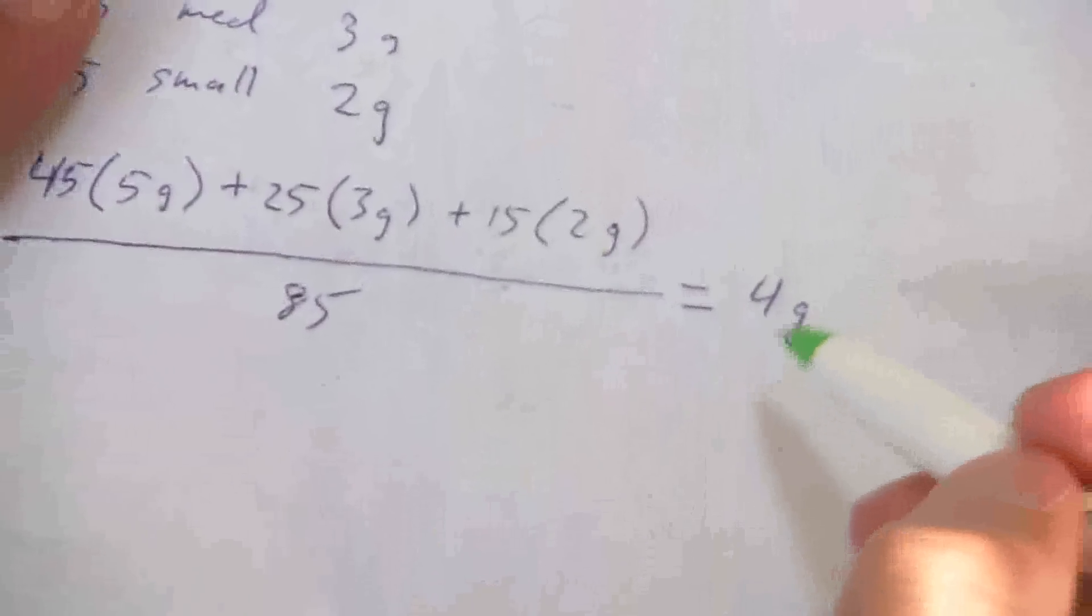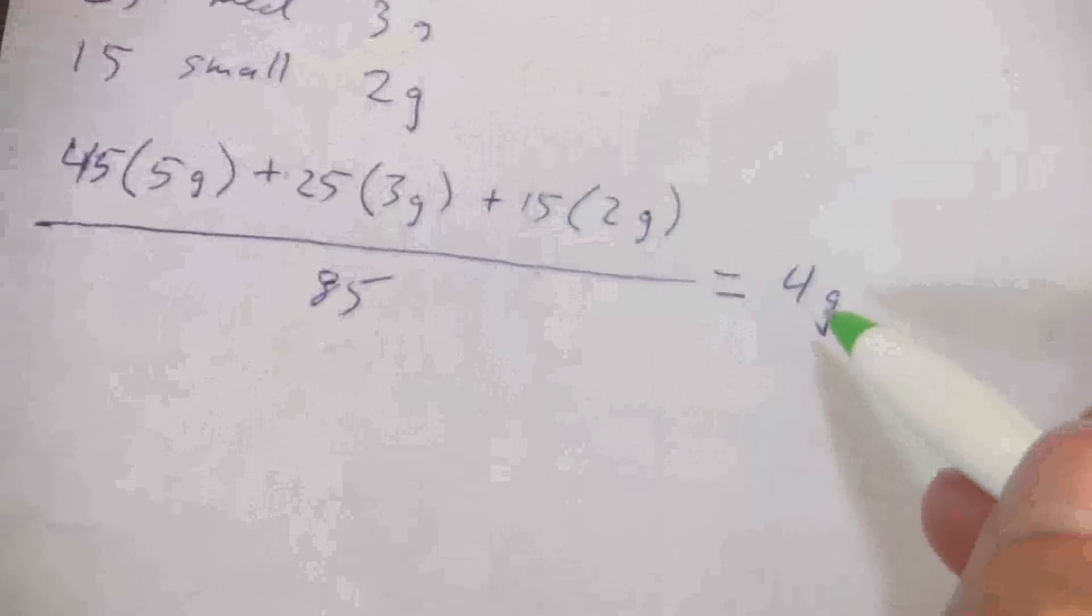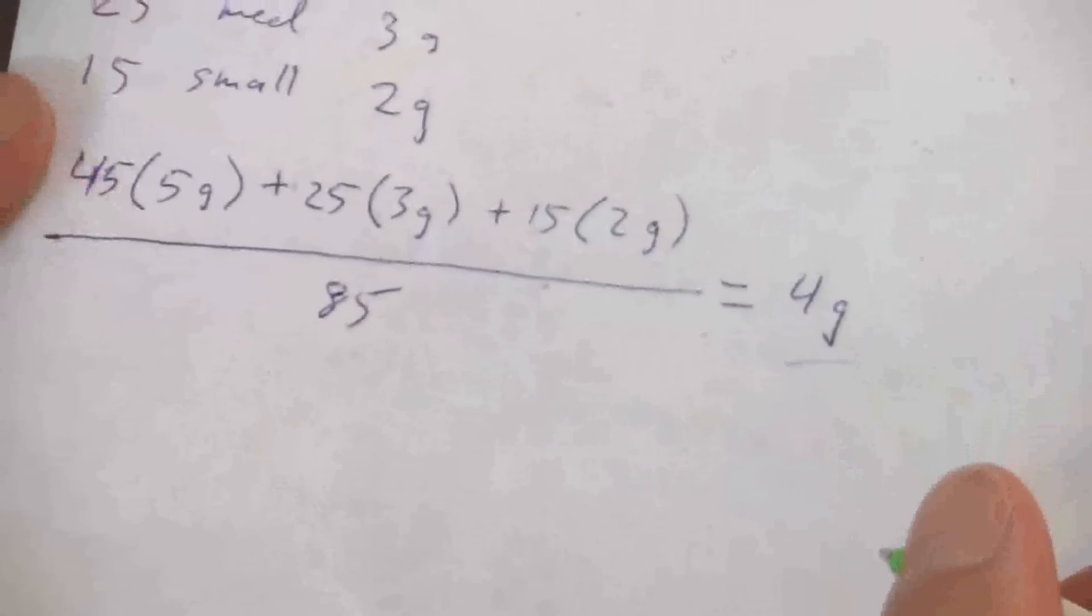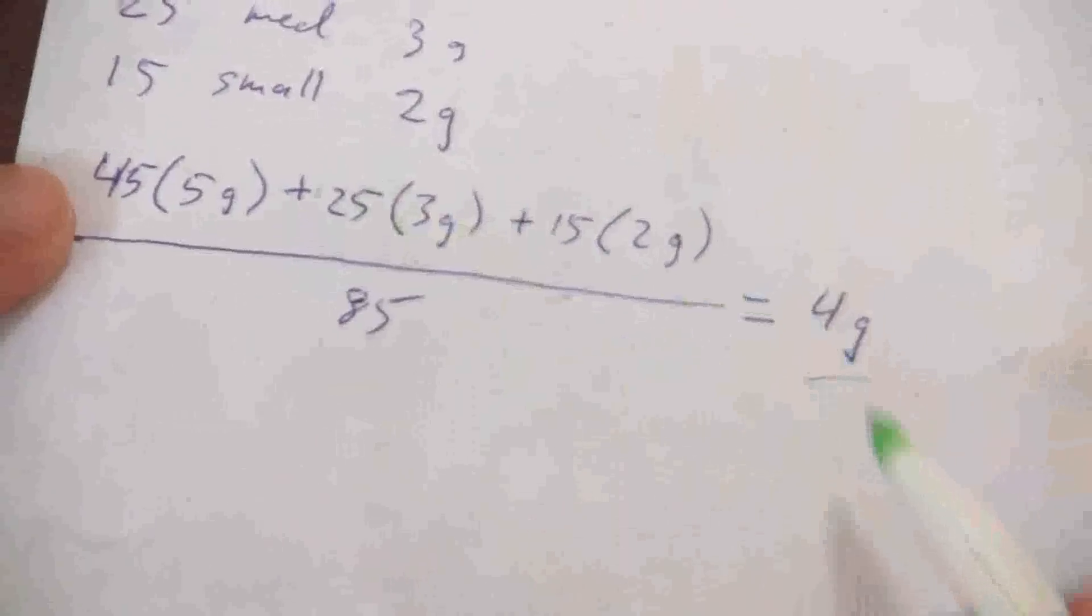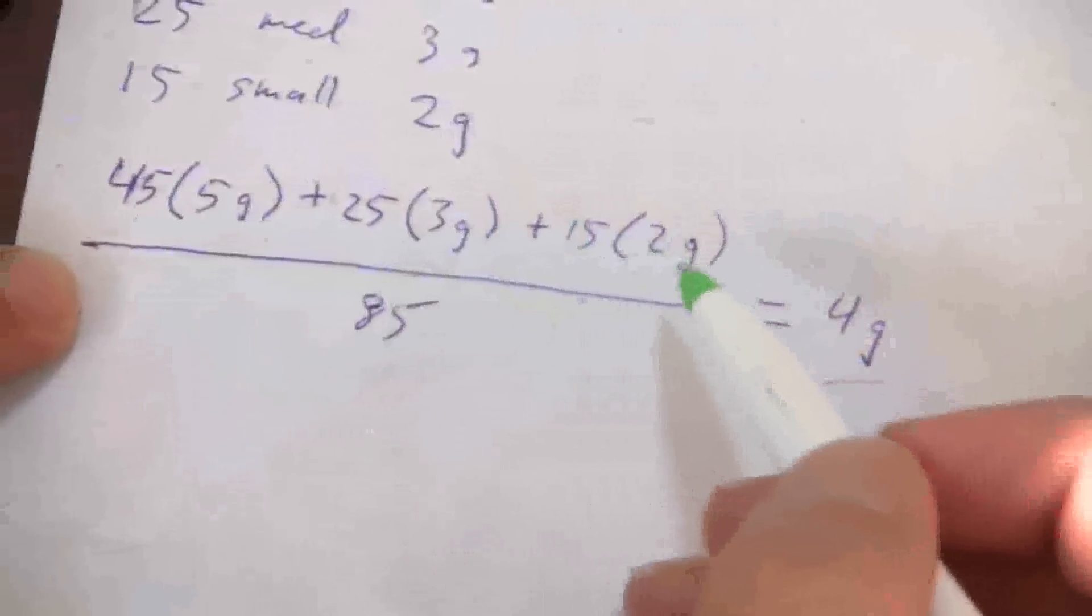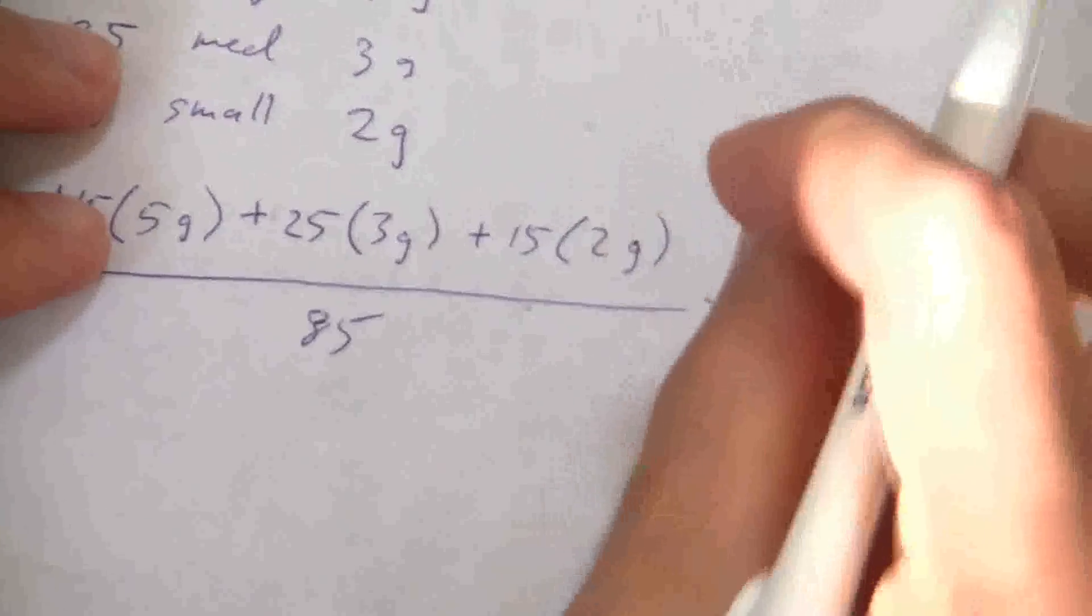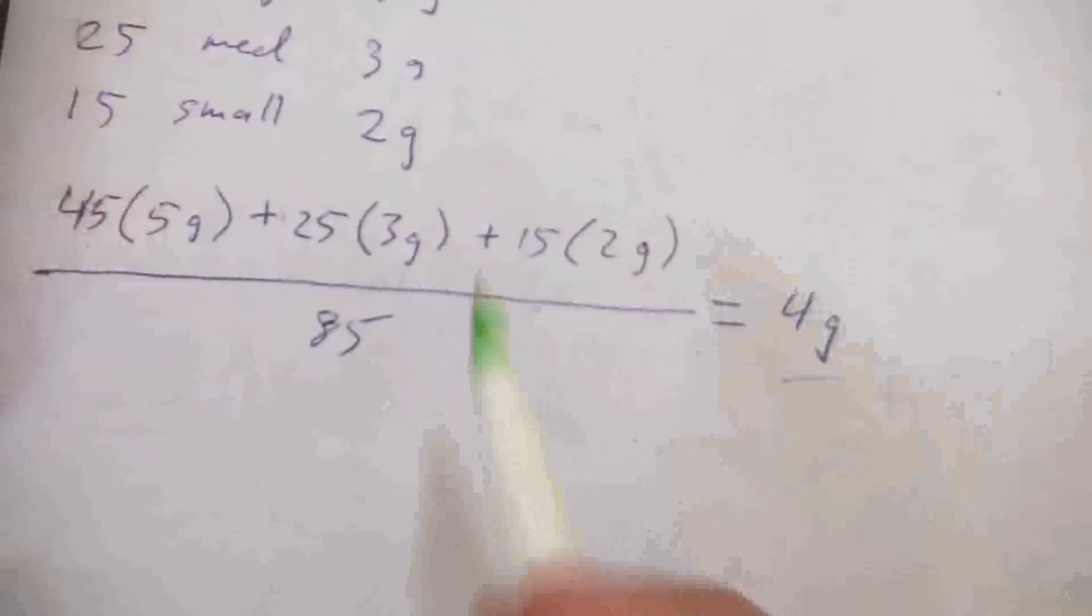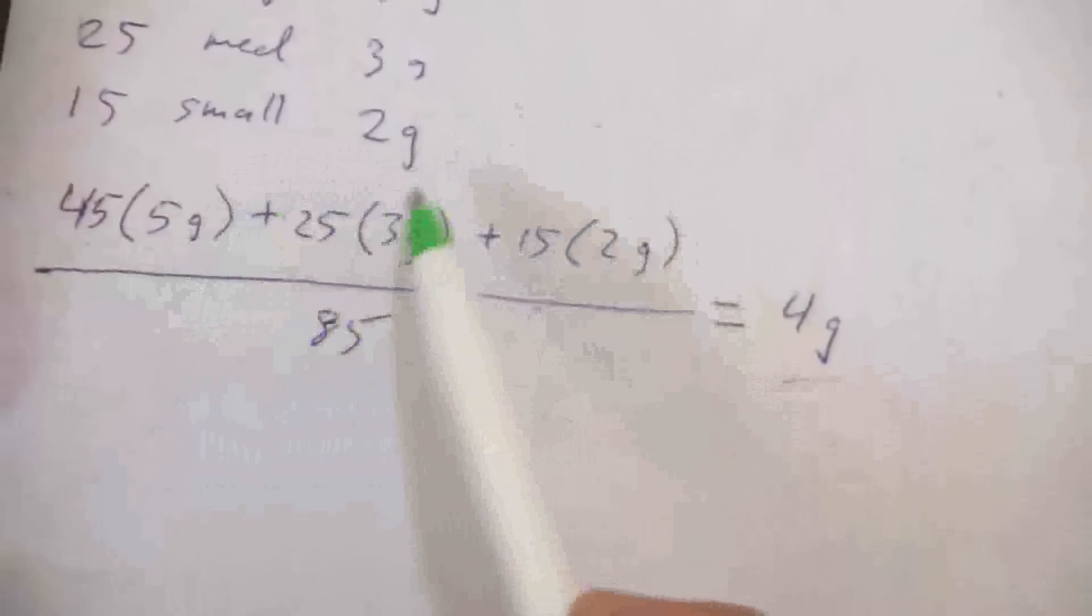So the weighted average for my weight of the marbles is 4 grams. But all I needed for that was just how many of each size that I had. I didn't have to individually weigh each and every marble, I just needed to know I have 45 of the 5-gram marbles.